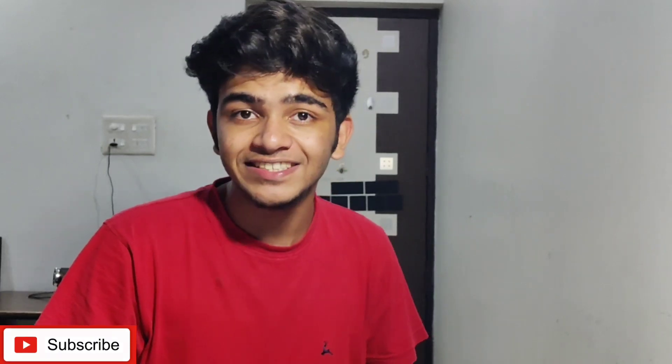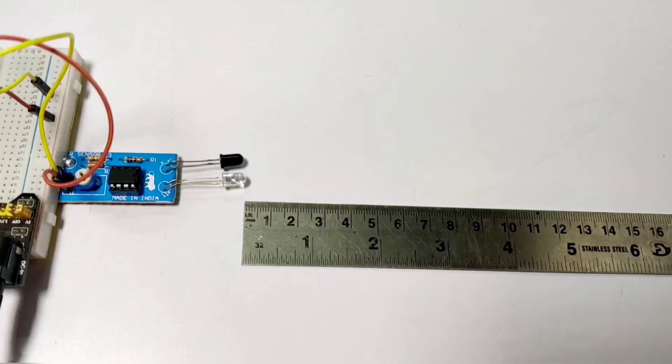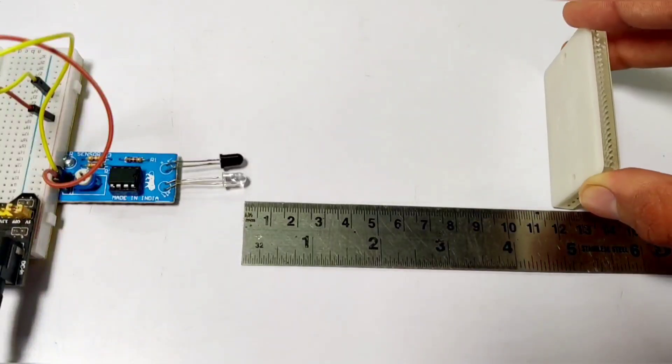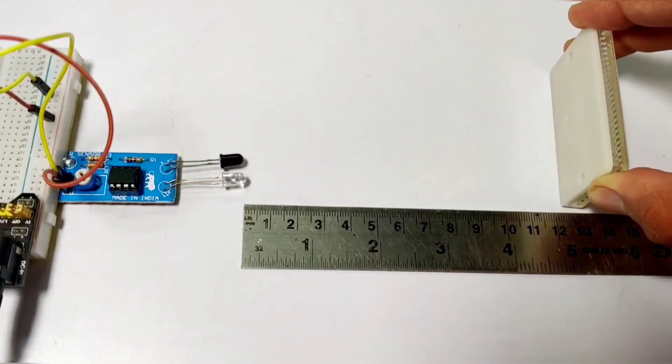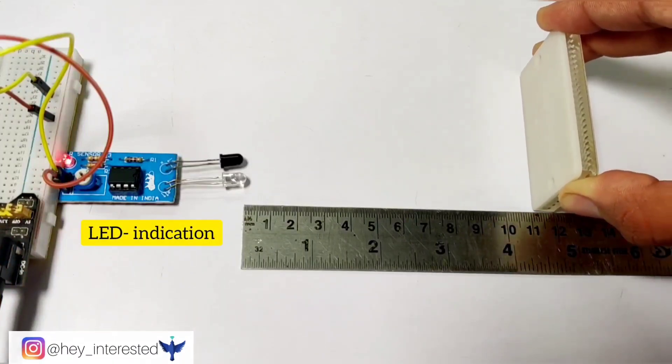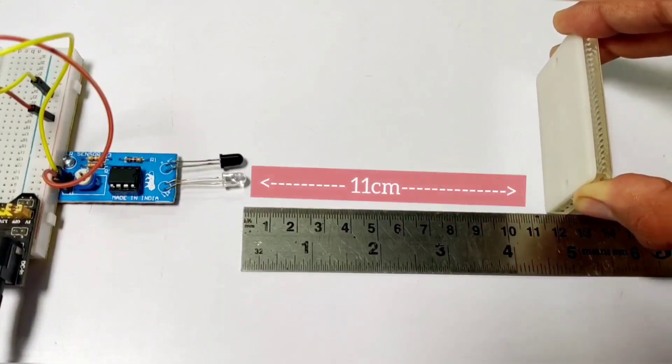So without further ado, let's start with the video. I have taken an IR sensor and I will be using a target. When the target comes in the sensing range, it senses. You can see the LED indication which shows the target range. The sensing range is about 11 centimeter.